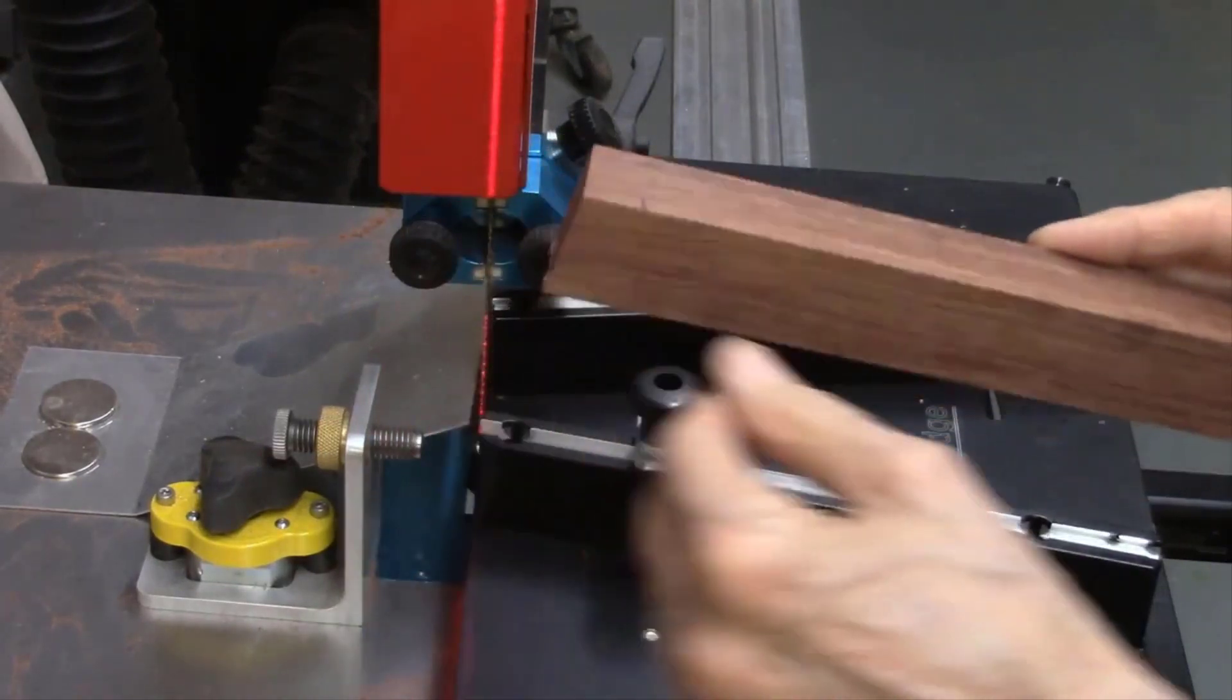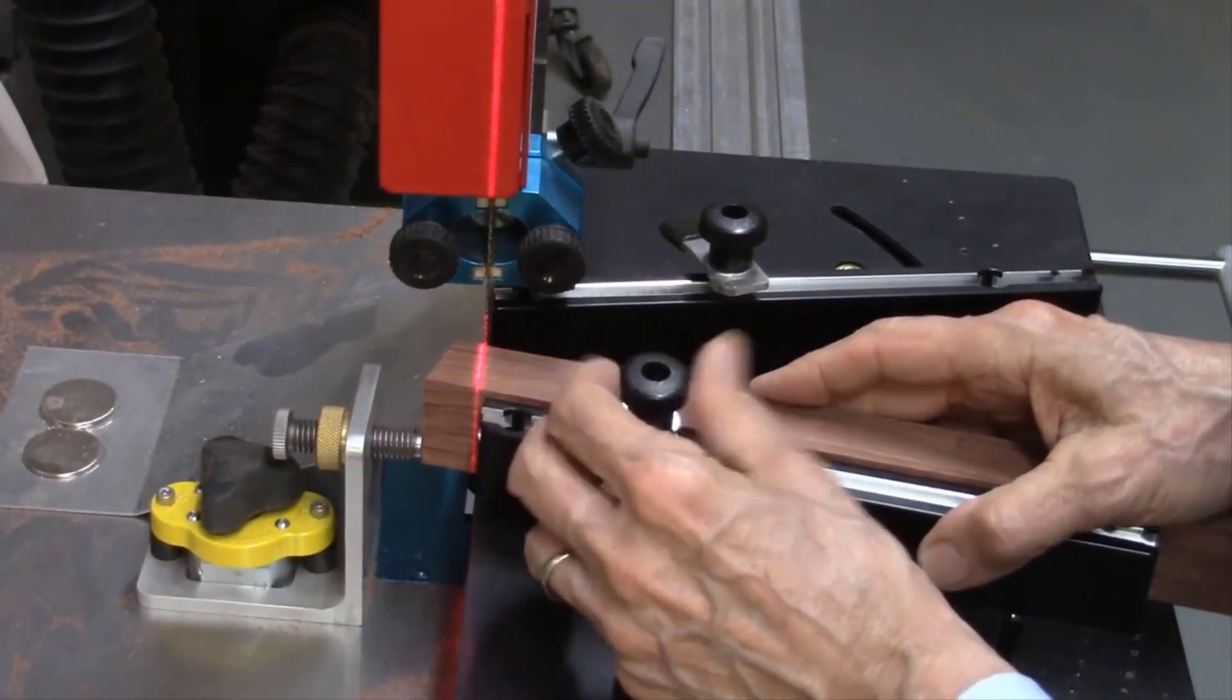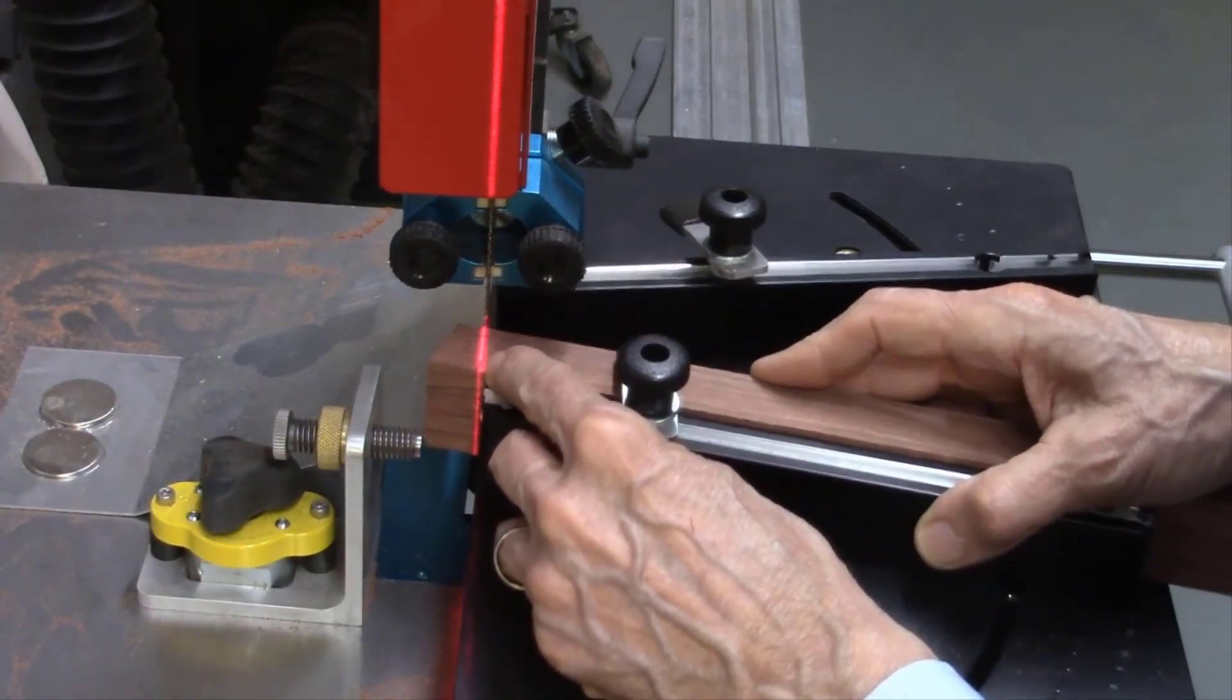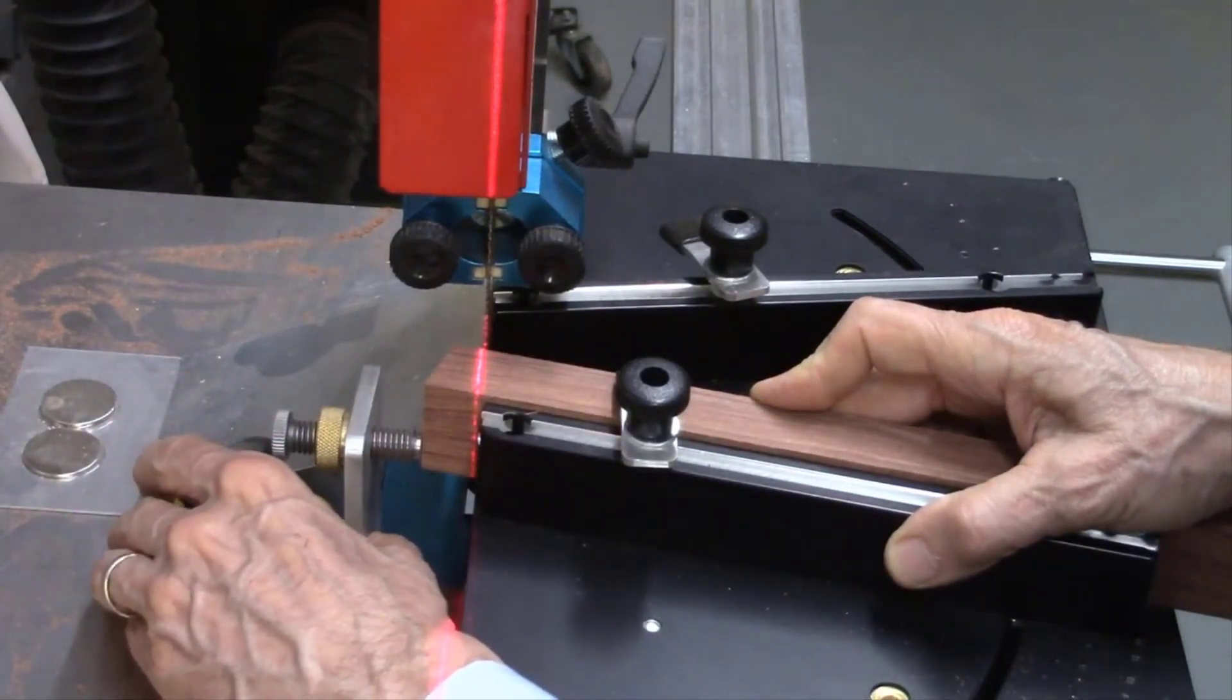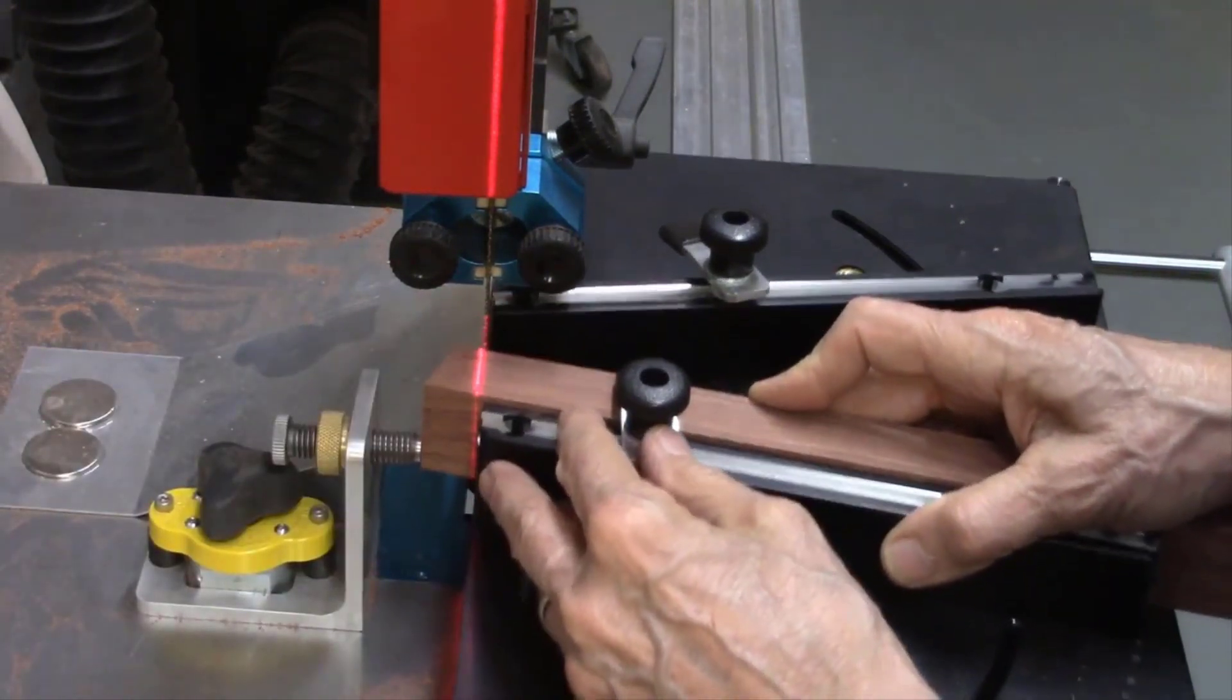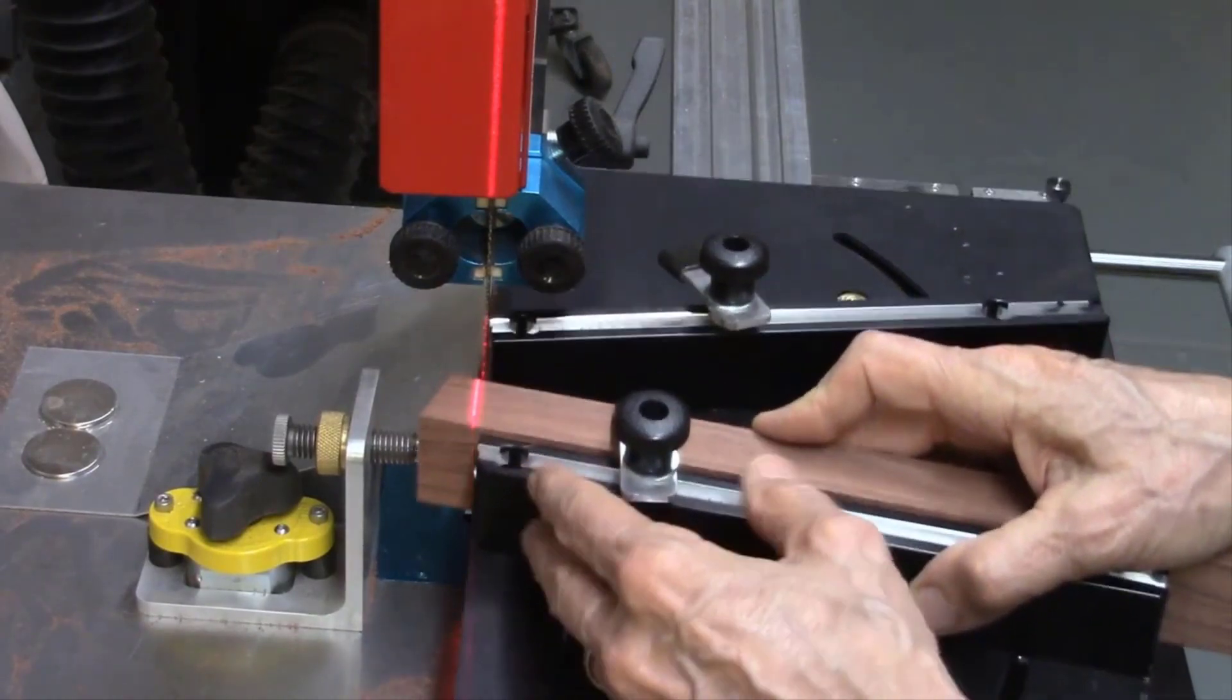I already made my first cut on the board so now I'll put this back in the bandsaw on the AcuWedge and I'll align the laser beam such that it just hits on the edge of that line. Adjust my stop so all my boards would be exactly the same length, and then we're ready to start cutting our wedges.